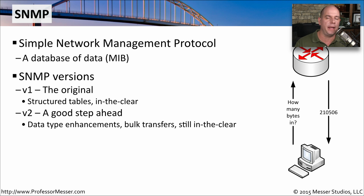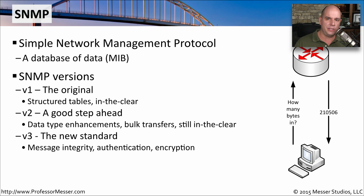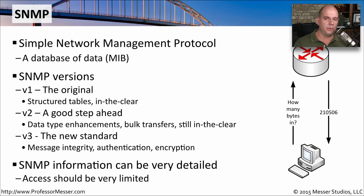SNMP version two was still in clear data — if you had a packet analyzer, you'd be able to see all of the SNMP information. So SNMP version three was created. This is the latest standard for SNMP, and it provides message integrity, authentication, and encryption to verify that information going across the network is secure. Whenever you're querying infrastructure devices, you're gathering metrics that other people could use against you, so it's important to keep this data as safe as possible. If you are using SNMP, you want to use SNMP version three if at all possible, and if not, you want to have all of that data contained on a private network.